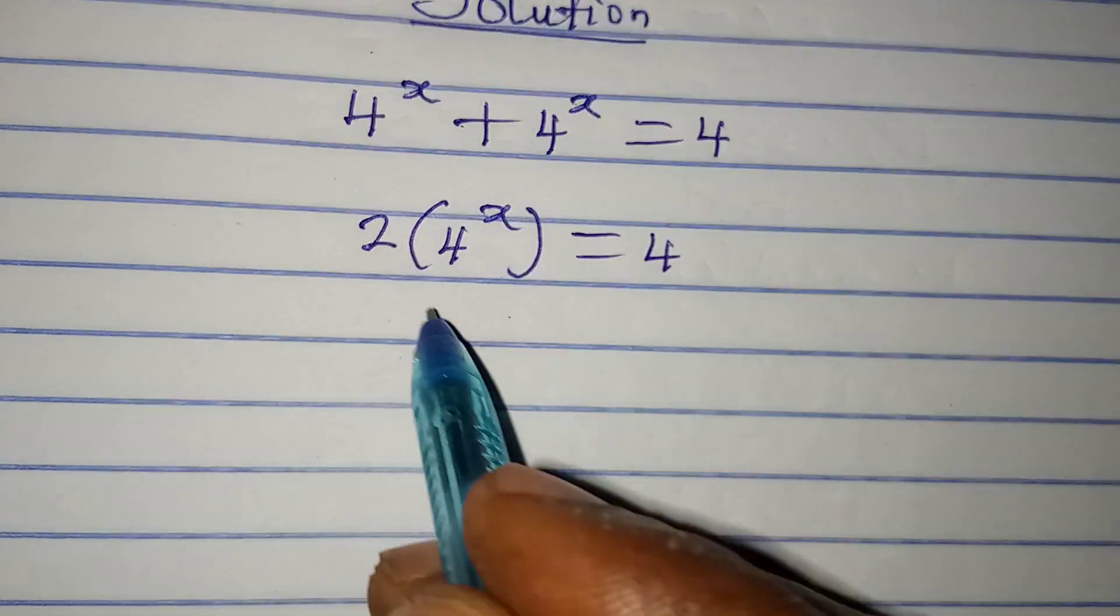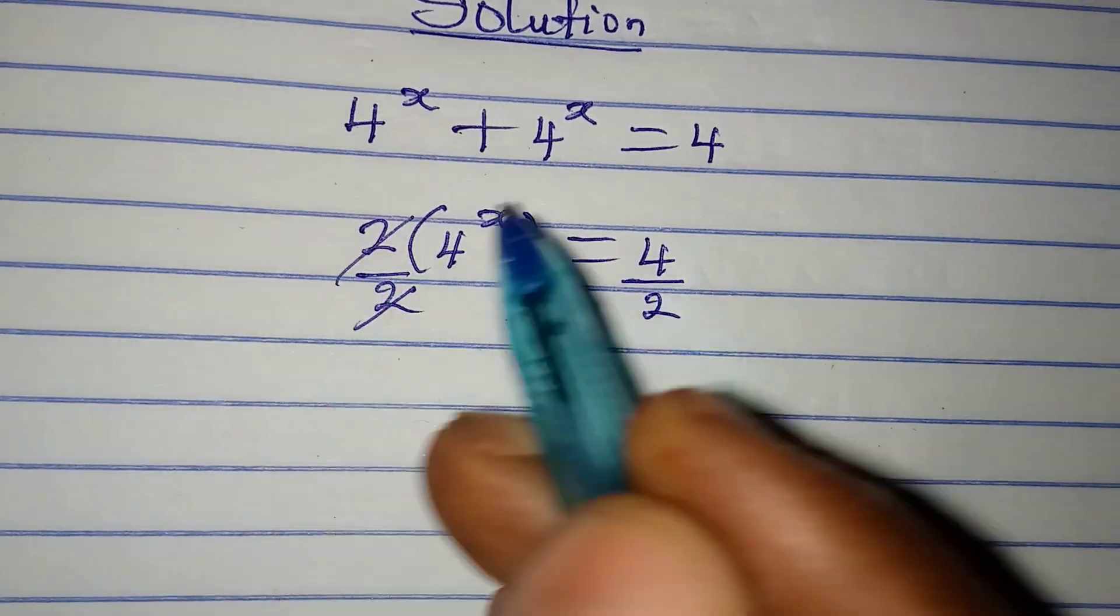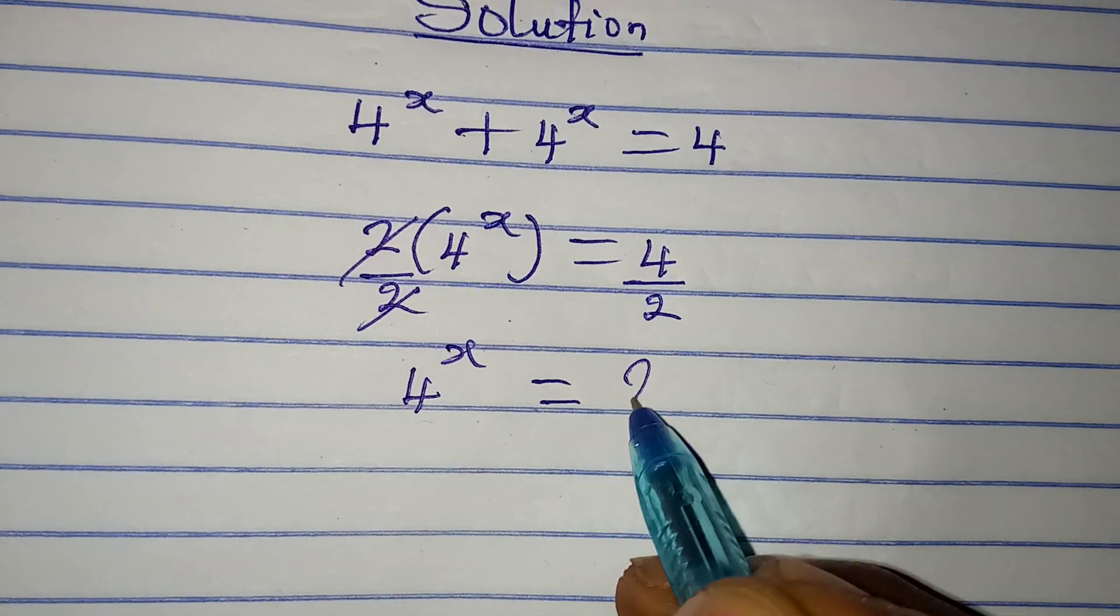Now the next thing is to divide both sides by 2. Two will cancel two, then 4 to the power of x will be equal to 2.